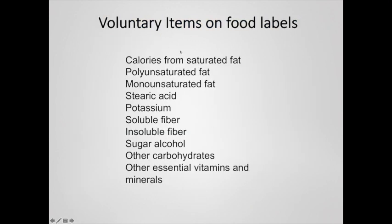Voluntary items on food labels can include calories from unsaturated fat, polyunsaturated or monounsaturated fat — two types of fat that are very good to get in your diet — stearic acid, soluble and insoluble fiber as a further breakdown of dietary fiber, and sugar alcohols, which are used as artificial sweeteners in sports drinks or protein beverages when attempting to add sweetness without adding sugar. Other essential vitamins and minerals can also be optionally listed, especially on supplemental items.